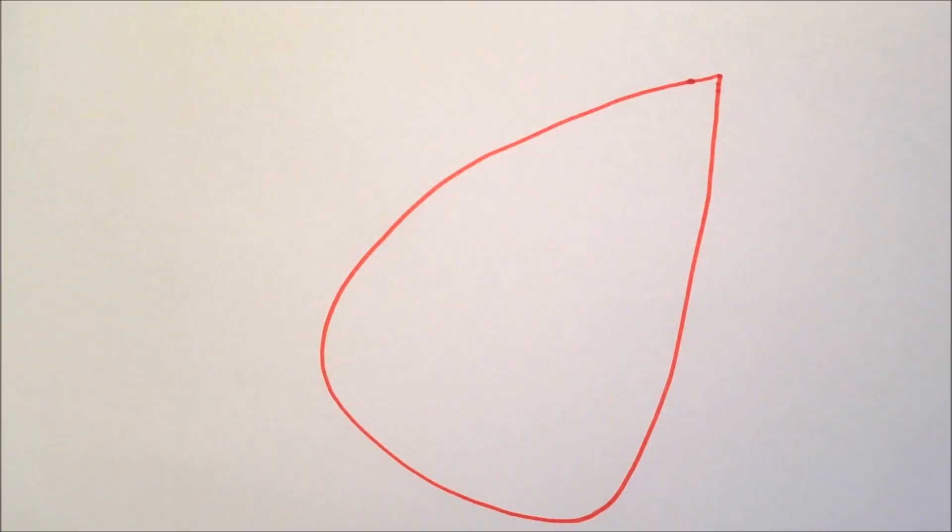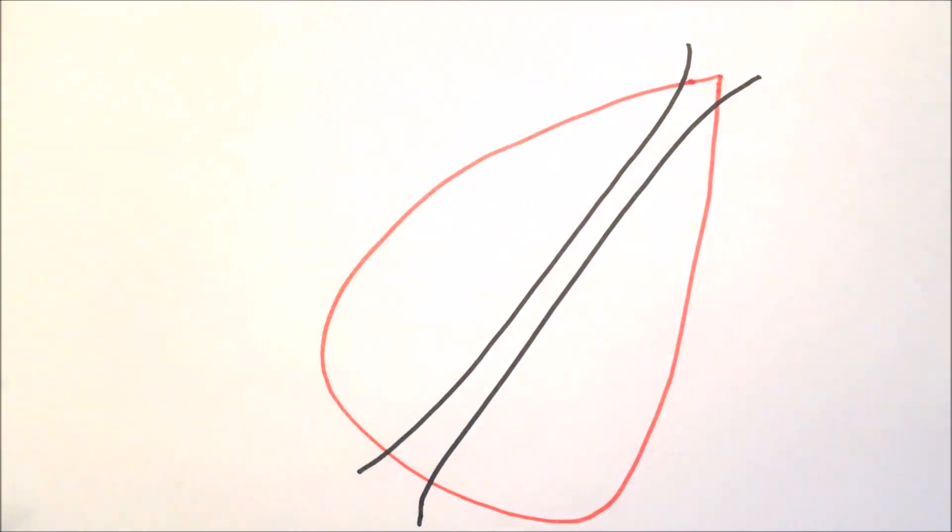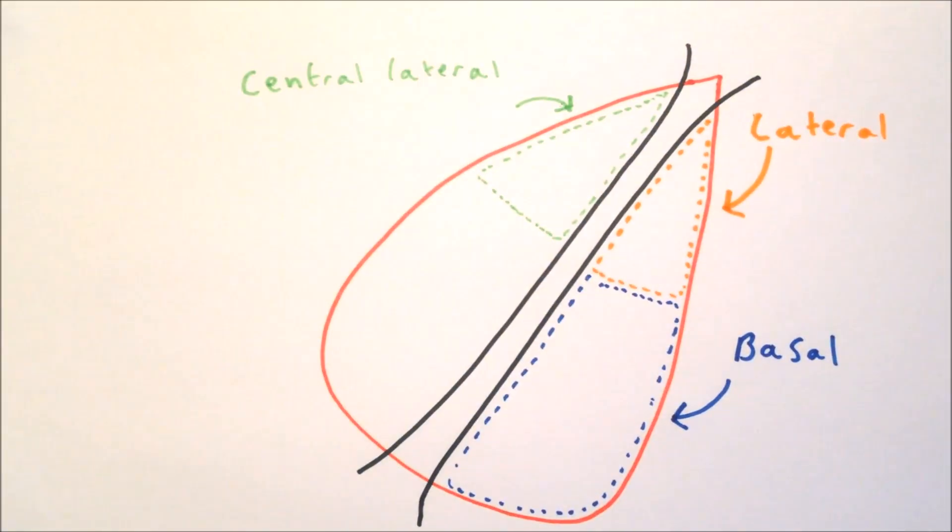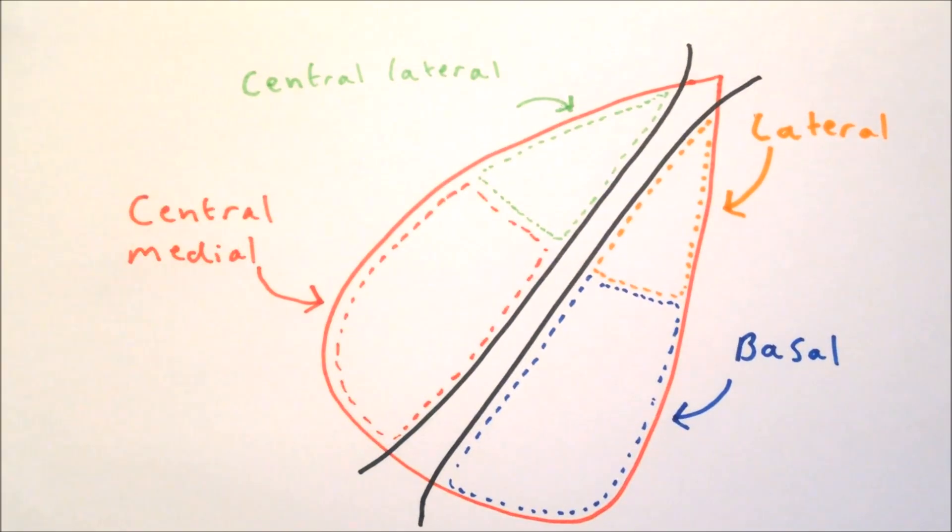The amygdala is located within the medial temporal lobe and is composed of a number of different nuclei. Some of the main nuclei are the lateral nucleus, the basal nucleus, the central lateral nucleus and the central medial nucleus.